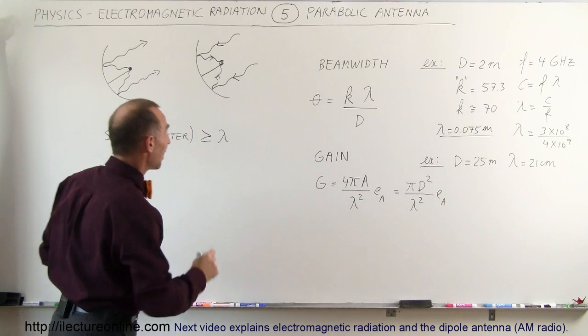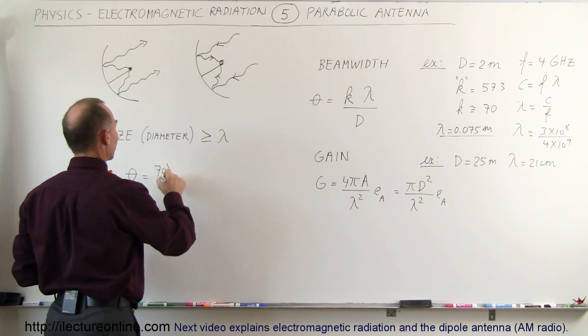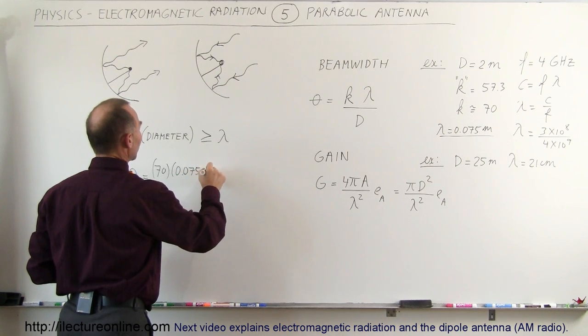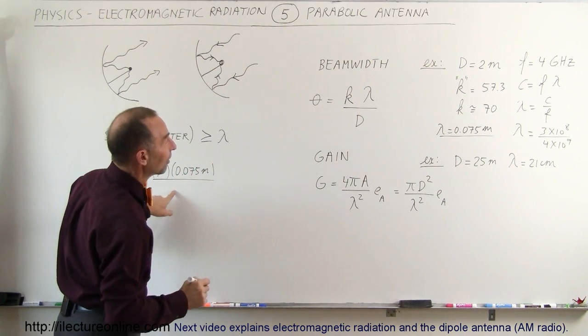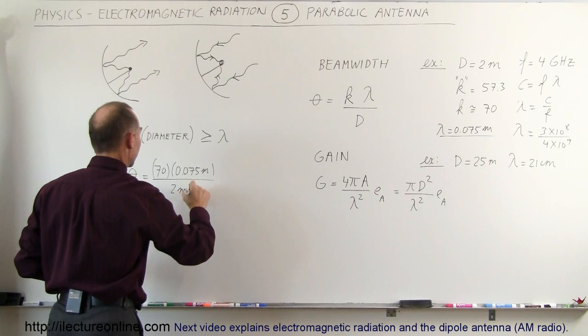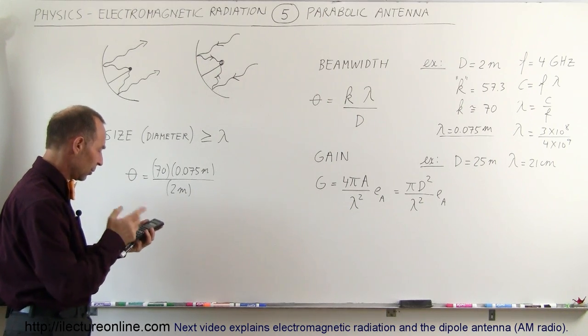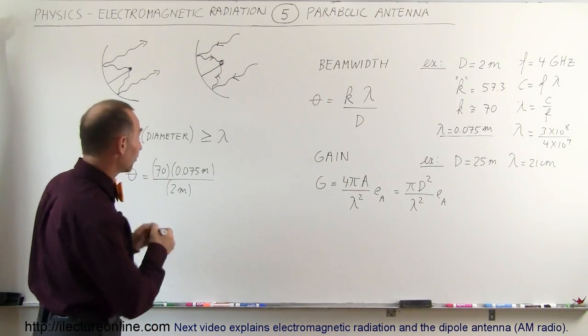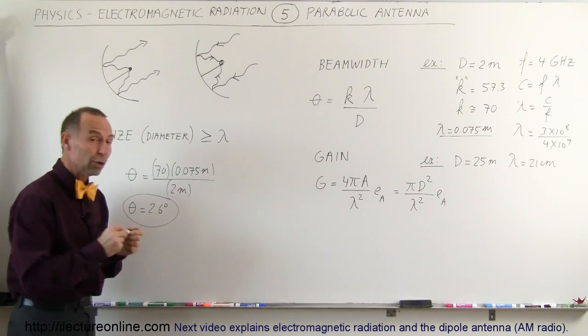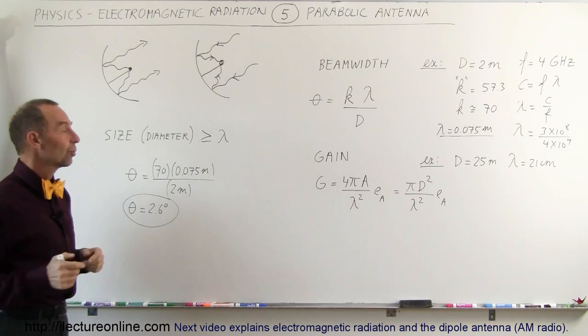Based upon that, let's figure out the beamwidth. The beamwidth would be equal to K, let's call it 70 for a typical parabolic antenna, times lambda which is 0.075 meters or 7.5 centimeters, divided by the diameter which is two meters. That gives us 2.6 degrees. So the beamwidth would be 2.6 degrees which is a very narrow beam. Notice that the smaller the wavelength, the narrower the beam. The greater the wavelength, the wider the beam over which it will spread out.